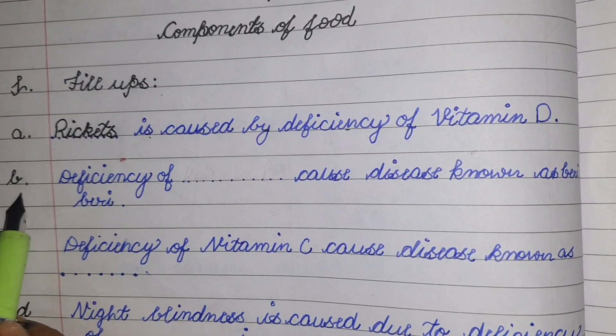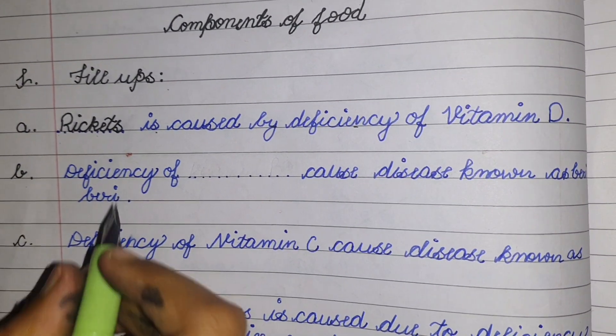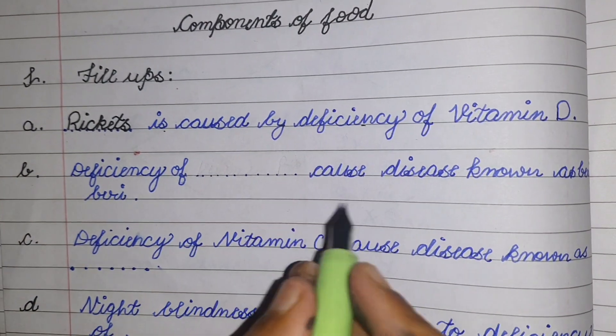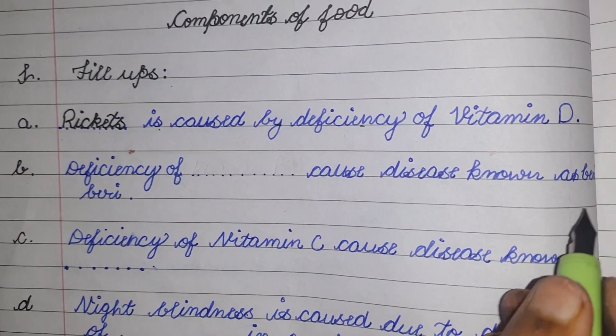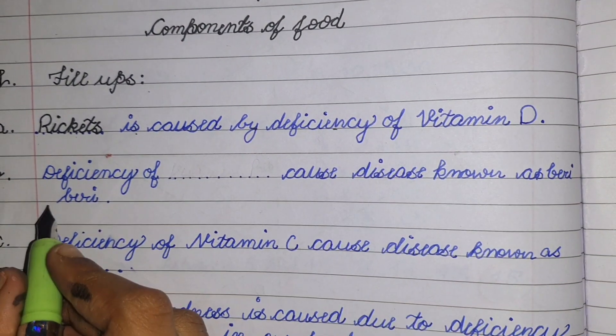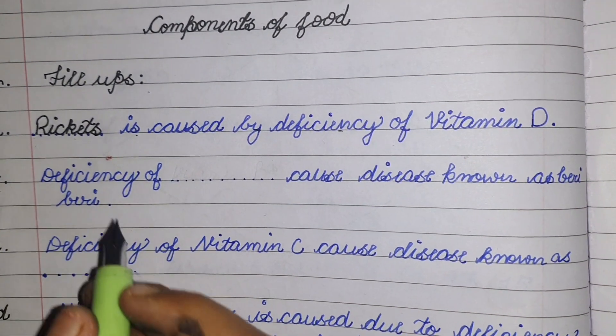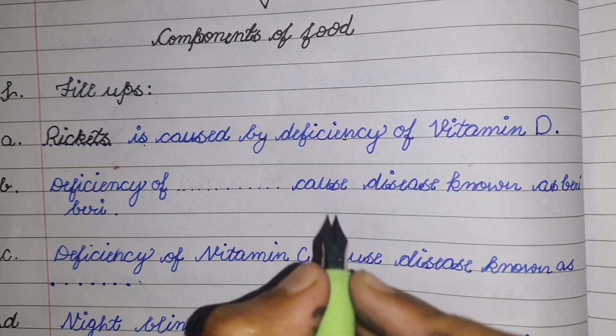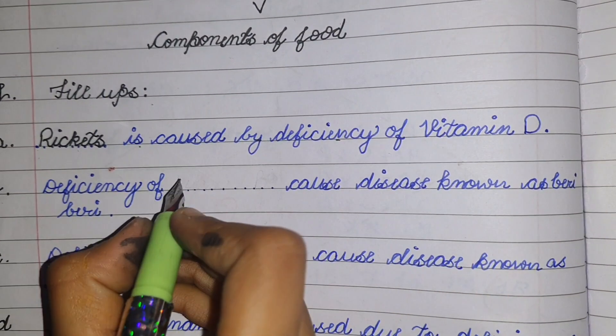The next question is: deficiency of dash causes a disease known as beri-beri. The answer is Vitamin B1.